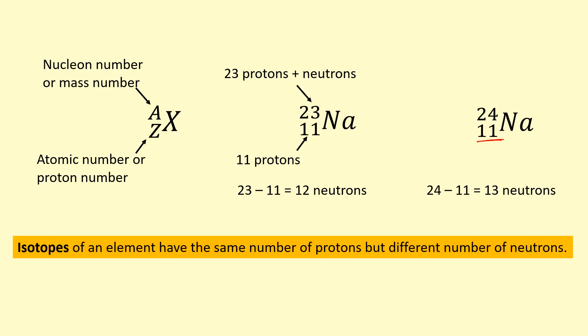These are what we call isotopes. So isotopes of an element have the same number of protons, but different number of neutrons.